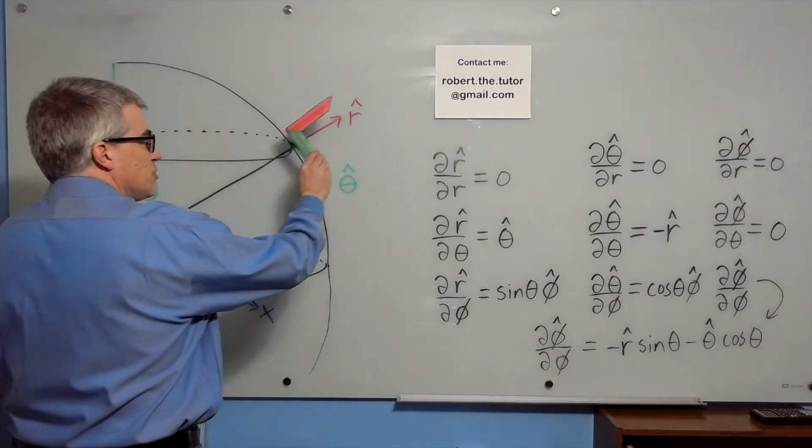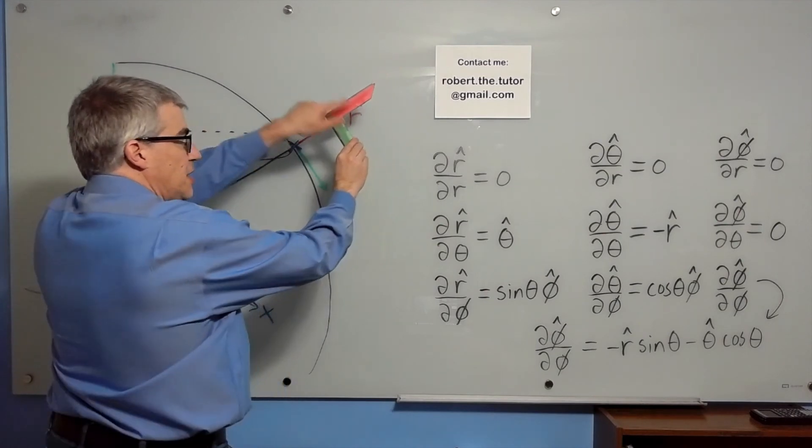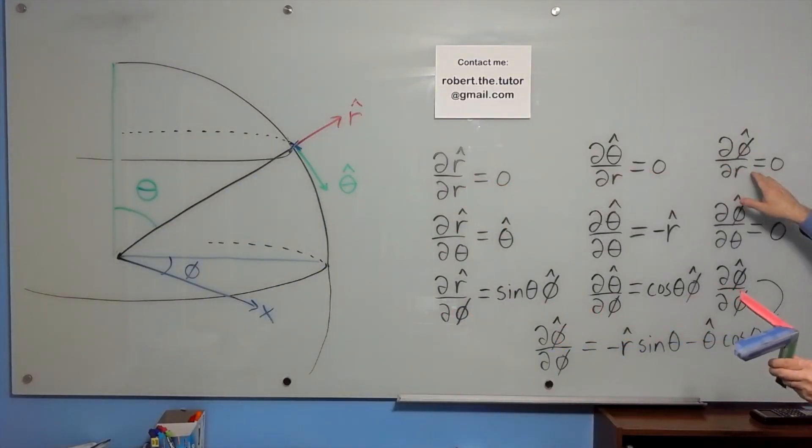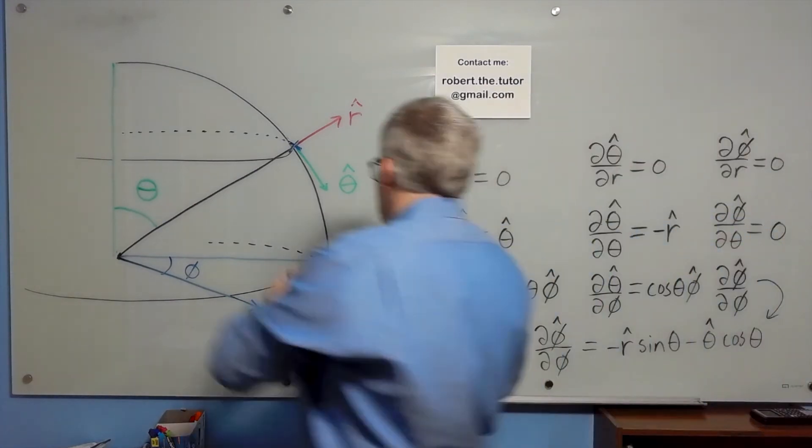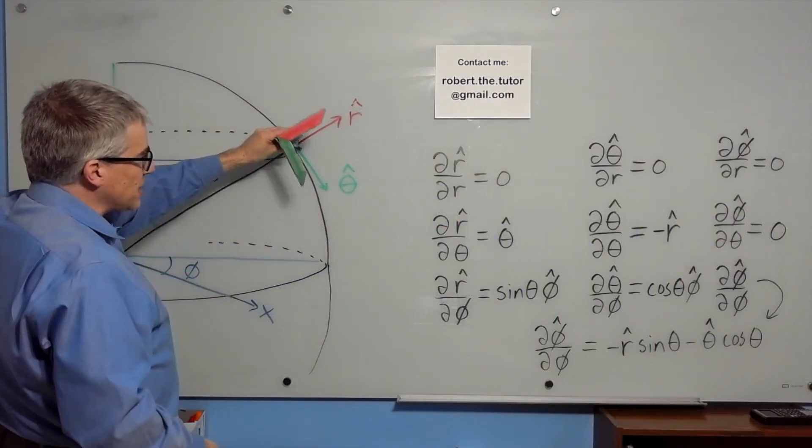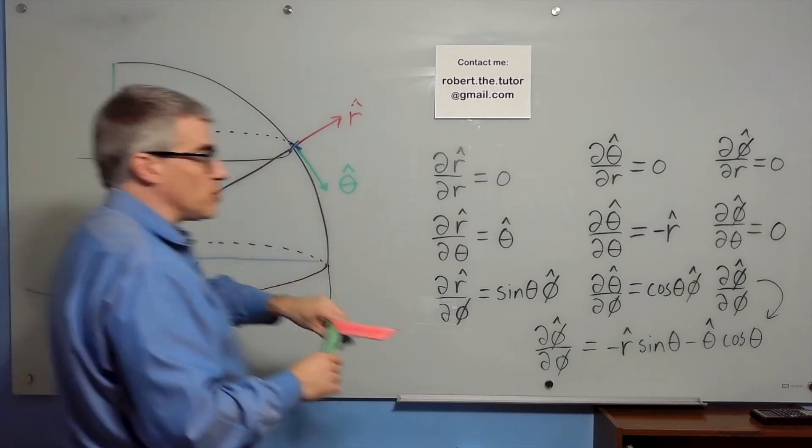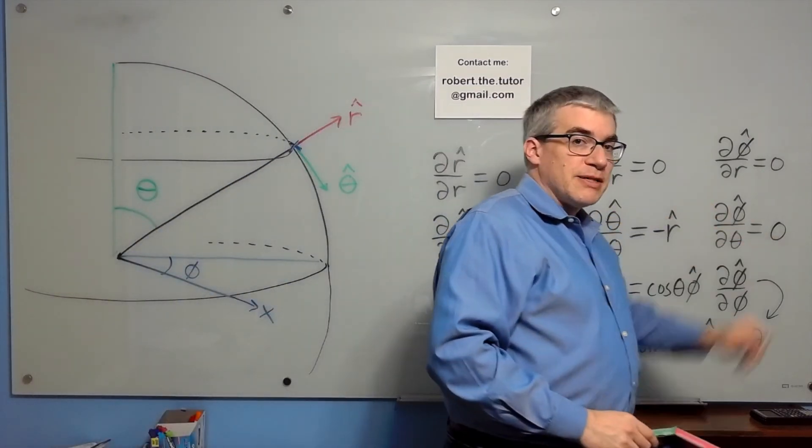If you change the value of r, then none of these change orientation, so the partial derivatives with respect to r are all zero. If you change theta, you're moving like this, so the r and the theta-hat change, but the phi is still into the board, so the partial phi with respect to theta is zero.